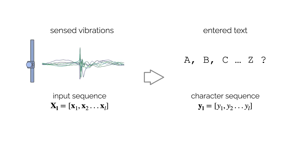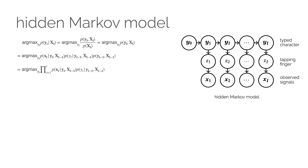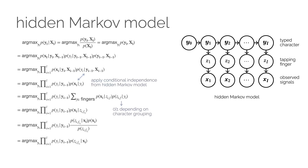All text entry methods infer the intended text from the user's input. For TapType, the input is represented by accelerometer signals. Our goal is to infer the most likely character sequence from the signal windows around typing events. We describe this problem through a hidden Markov model, simplifying the mathematical expression using the resulting conditional independencies and specifics of our typing technique. We arrive at a final expression consisting of a product of two factors for each tap event: the first factor is the likelihood for a given character given the text entered so far, estimated through an n-gram language model.